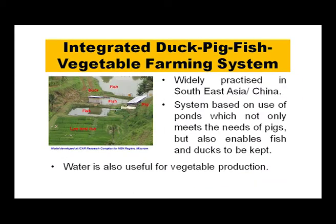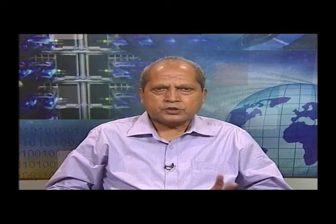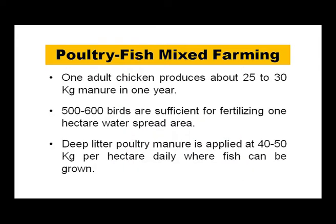Integrated duck-pig-fish-vegetable farming is widely practiced in Southeast Asia and China, using ponds that meet the needs of pigs while also enabling fish and duck rearing, and supporting vegetable production. In poultry-fish mixed farming, bird droppings can be used directly as fish feed for omnivorous fish such as common carp, by constructing huts over fish ponds. One adult chicken produces about 25 to 30 kg of manure per year; 500 to 600 birds suffice for one hectare of water spread, and deep litter poultry manure is applied at 40 to 50 kg per hectare daily.